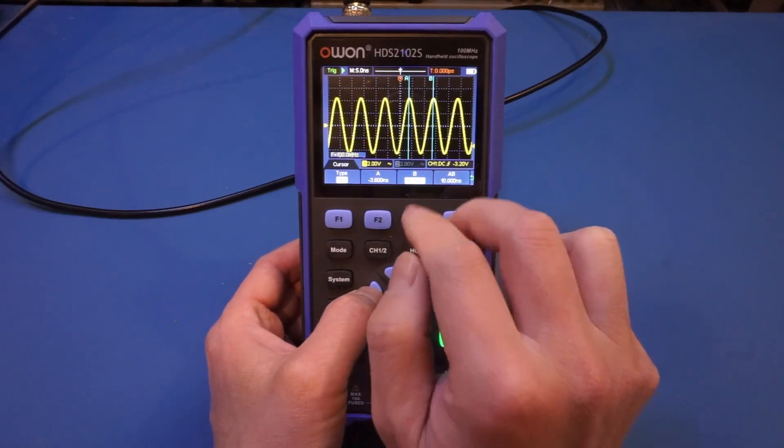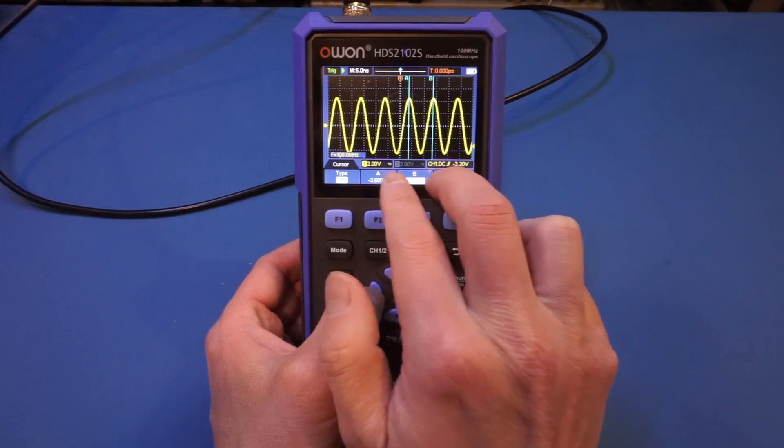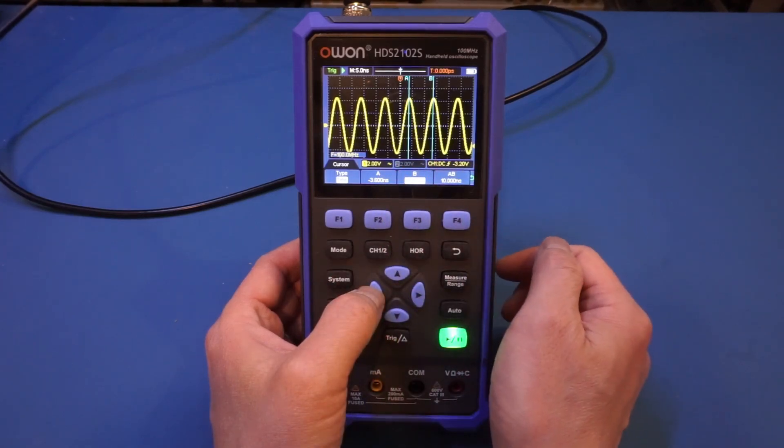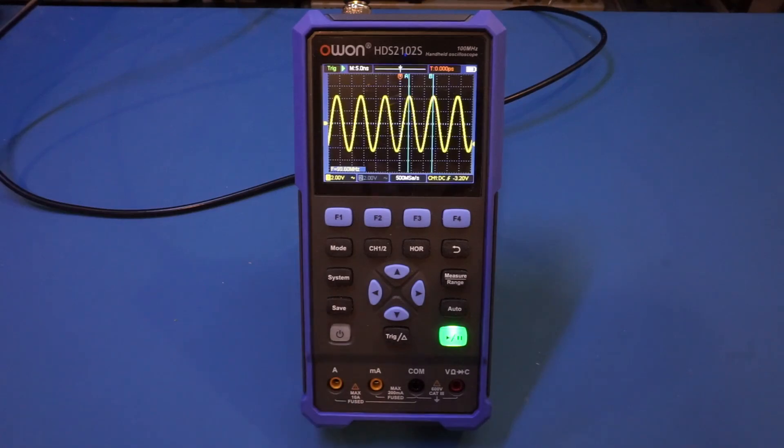And you can see, indeed, the time difference between A and B is 10 ns, which translates into 100 MHz as well.